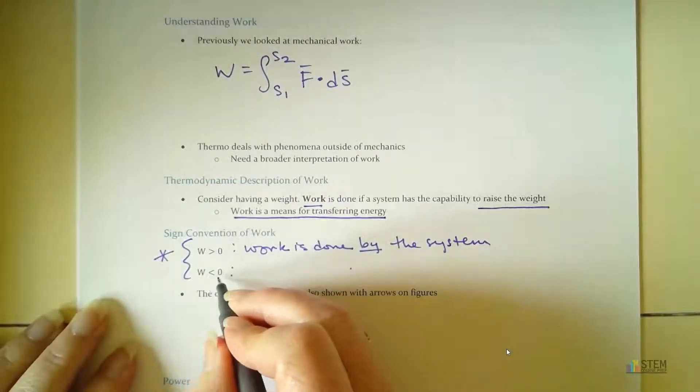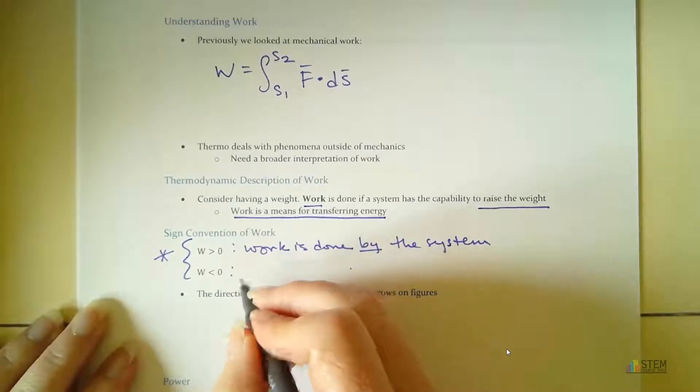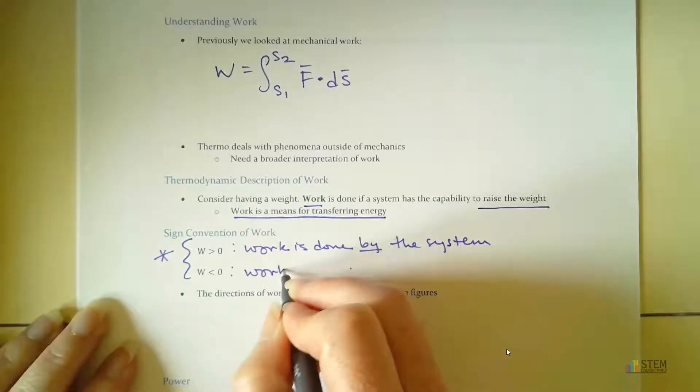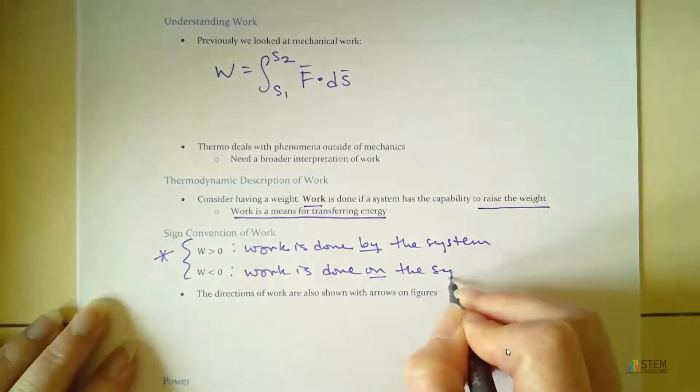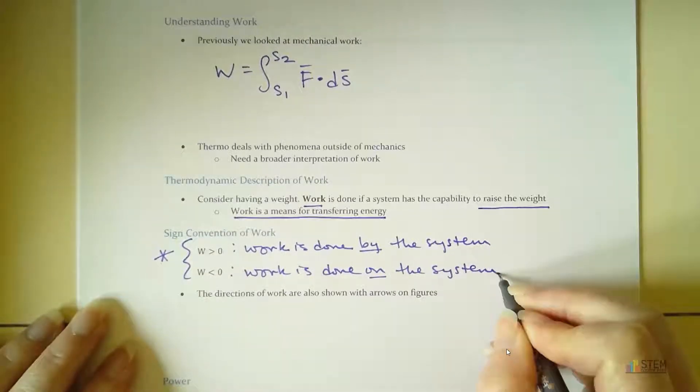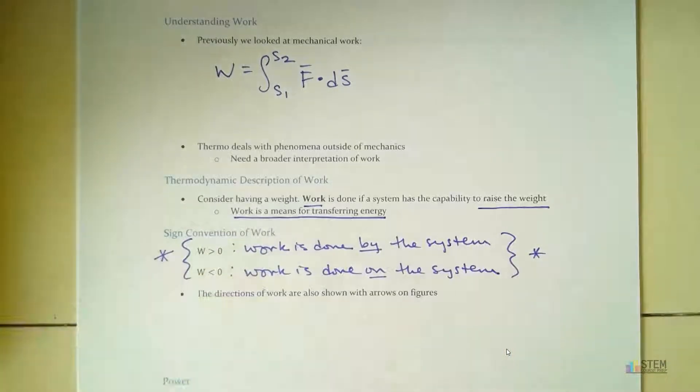Now, if work is negative, so if it's less than zero, then we say work is done on the system. Okay, so that right there is going to be important.